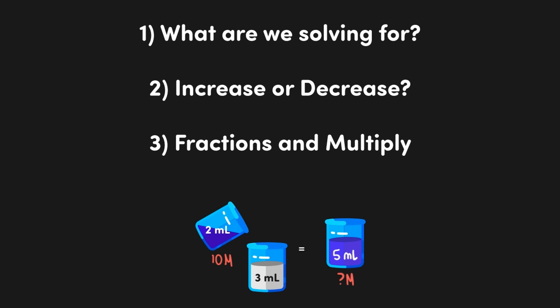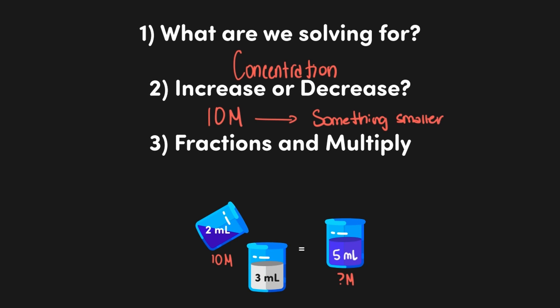Let's look at those steps now. First, determine whether you are being asked to solve for the concentration or volume. In this example, we are trying to find the final concentration. Next, determine whether the value you are solving for is smaller or larger than the value given — here we are diluting a 10 molar stock solution, so the concentration must decrease. Now arrange the other given values as a fraction: if the value is decreasing, use the smaller fraction; if increasing, use the larger fraction. Since the concentration decreases, we arrange the volume values as two-fifths (not five-halves), then multiply: 10 times two-fifths equals 4 molar.